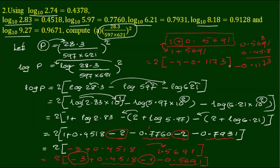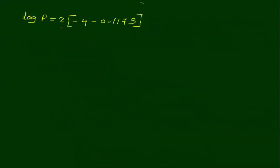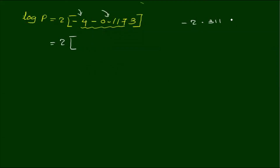That's the number. So the number is 0.5 equals 2 into the number. The number is minus 2. So this is minus 2. So this is minus 4.